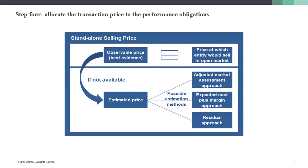This graphic gives you a good guideline when reviewing your contracts. The first consideration is: if you have an observable price, that's the best evidence — the price at which the entity would sell in an open market, third-party arm's length. However, if that's not available, there are three different approaches.